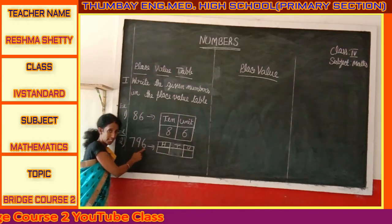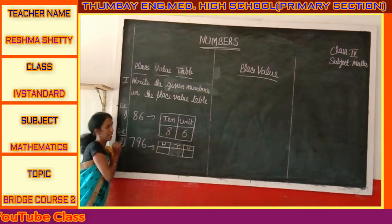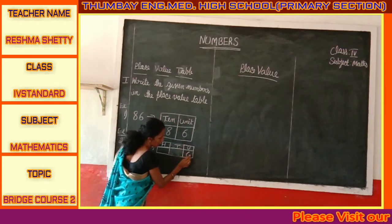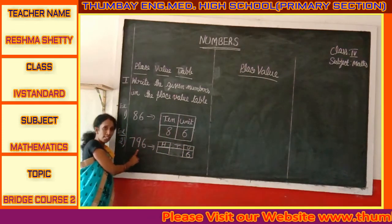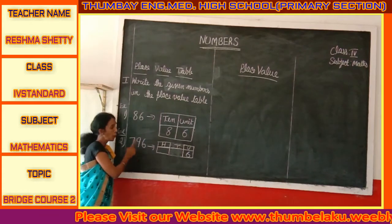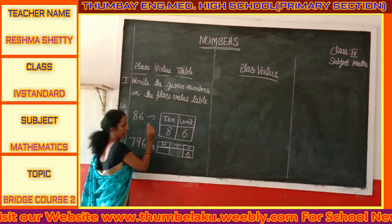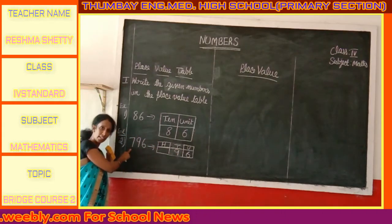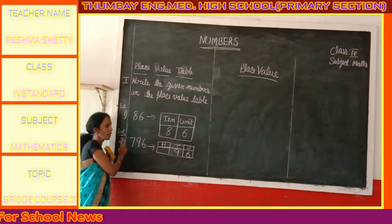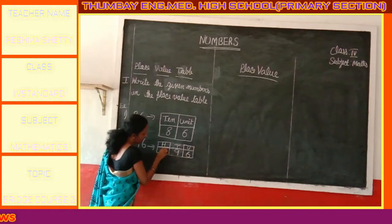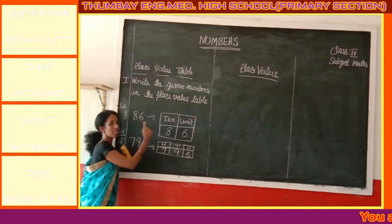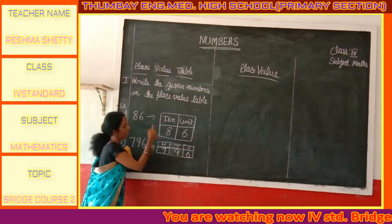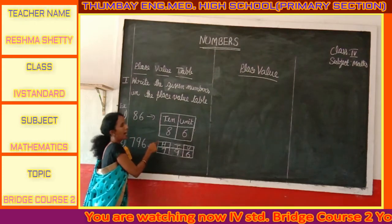Let's place the number 796. How many units are there? There are 6 units, so 6 is written in the unit place. How many tens are there? Here we have 9 tens, so 9 is in the tens place. Next we have 700, so we write 7 in the hundreds place. In the place value table: 6 represents unit place, 9 represents tens place, and 7 represents hundreds place.